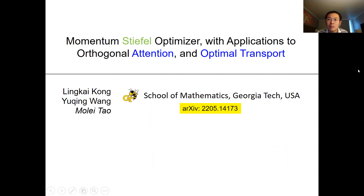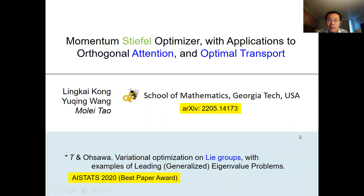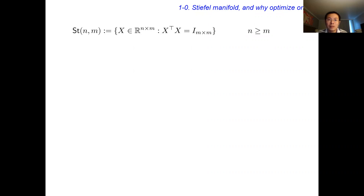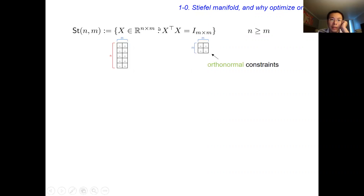If any of you have heard me talking about another work on optimization on Lie groups, the work I'm talking about now is actually new, and I will explain the difference. First of all, let me talk about what is the Stiefel manifold and why do we want to optimize on it? By optimize on it, I mean optimize a function that is defined on the Stiefel manifold.